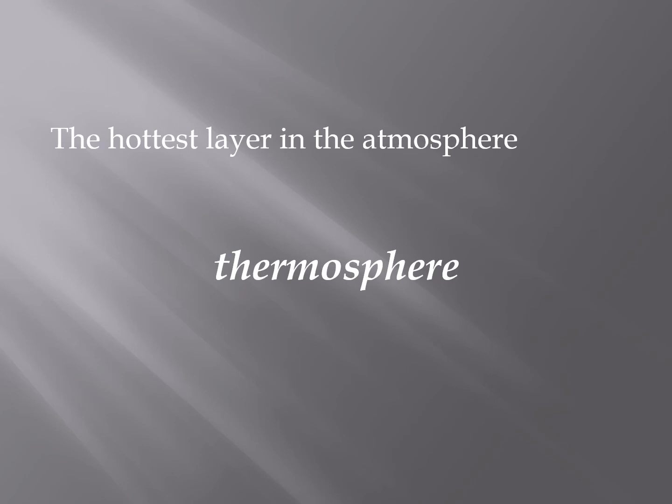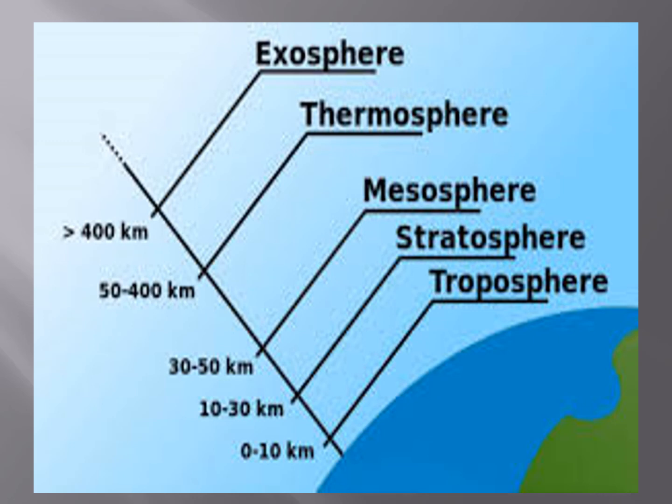The hottest layer is the thermosphere. As its name indicates, 'thermo' means temperature or heat, and 'sphere' means layer. So the thermosphere is the layer of the earth's atmosphere with the maximum temperature. Another slide also shows the different layers and their distances from the earth's surface.